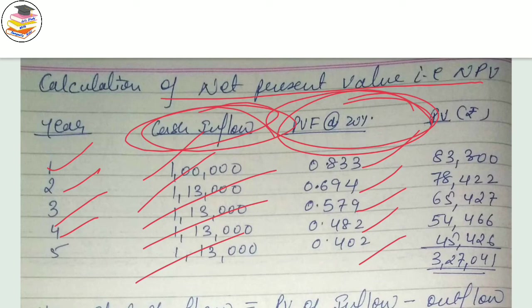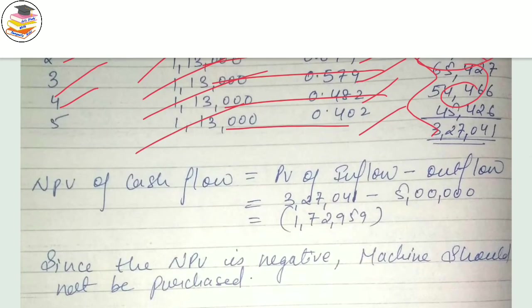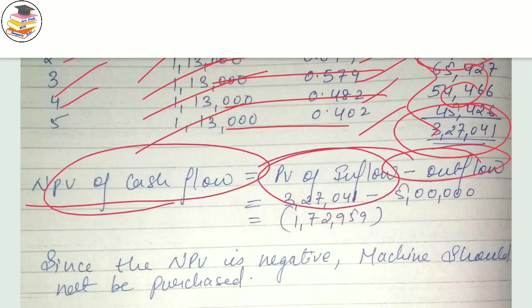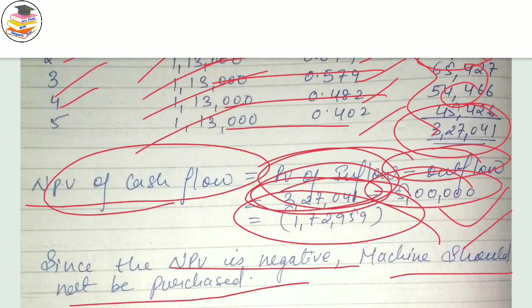I prefer calculating the present value factor myself rather than using the chart — there's a lot of confusion with it for me, but you can use the chart or the PDF if you prefer. Multiply the cash flow amounts by the present value factors and add them up. Your total present value of inflows comes to 3,27,041. Net present value = present value of inflows minus outflow of 5 lakh. Since the NPV is negative, you should not invest — you would invest 5 lakh but get less in return, so do not purchase the machine.